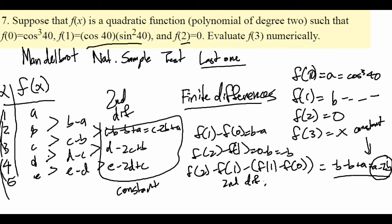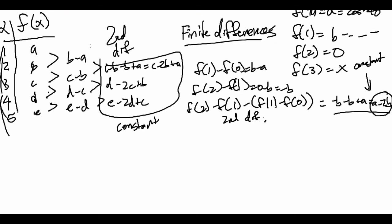And this is the second difference that always stays constant. And now that we've found the second difference, we can use that second difference to find f of 3.